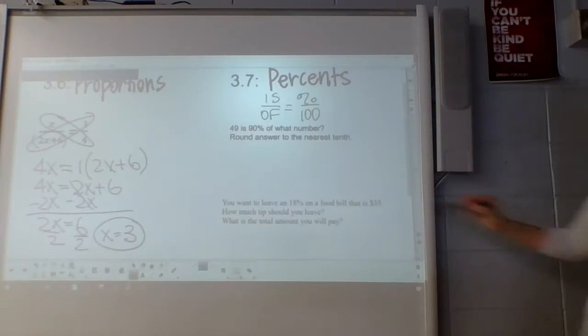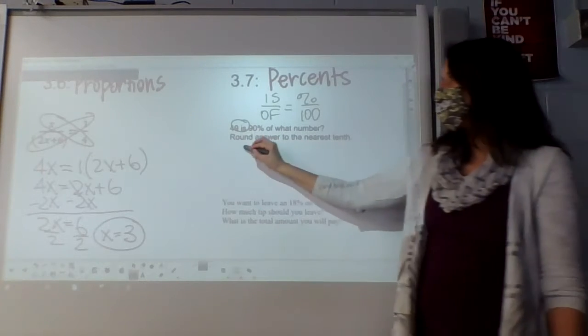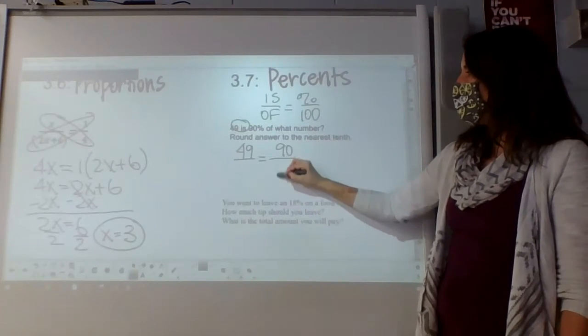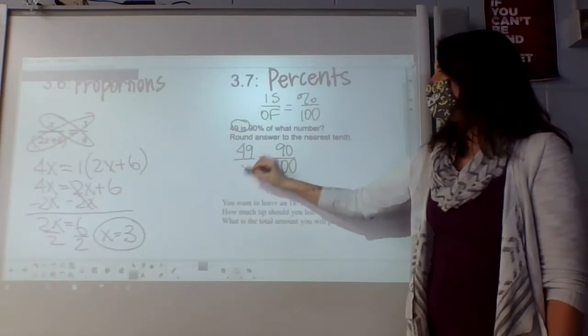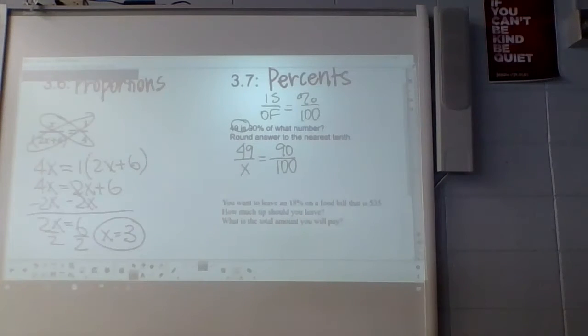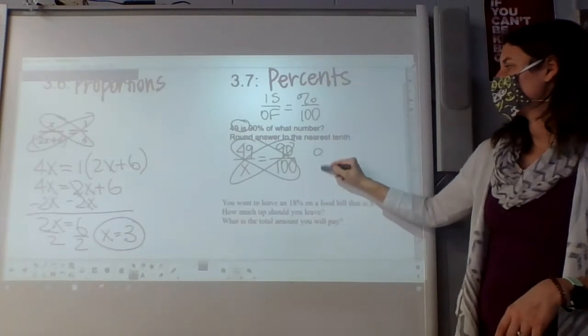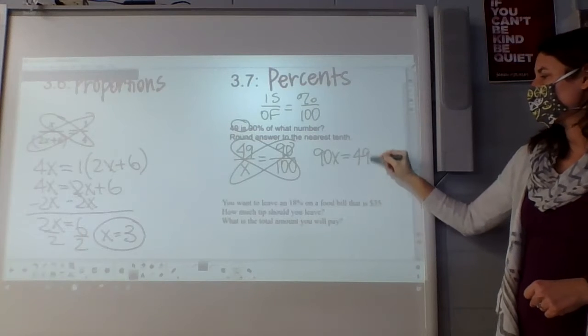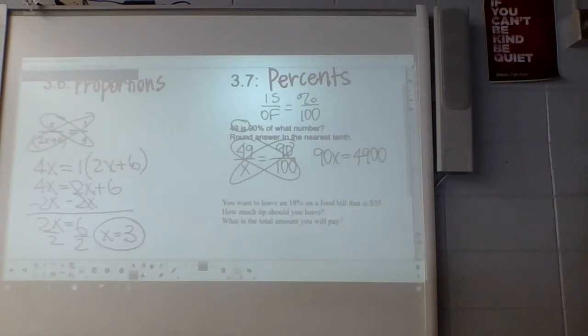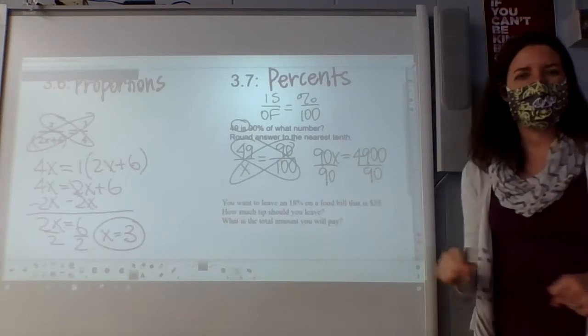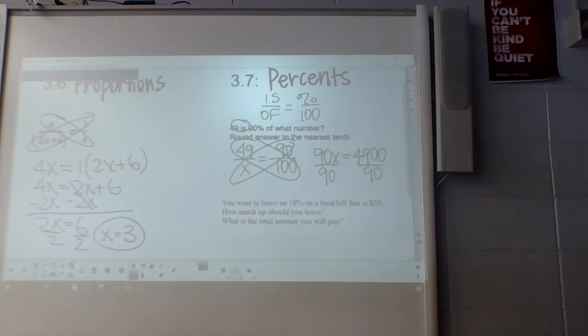So 49 is 90% of what number? So the 49 is my is, that's going to go on top. 90% goes over 100. And it's of what number? So that's where my x is going to be, is my of. So then we'll divide by 90. And what did we end up with then, guys? 54.4.